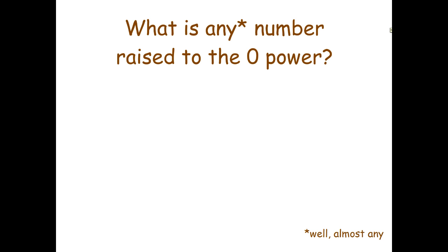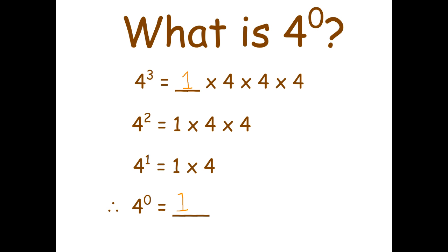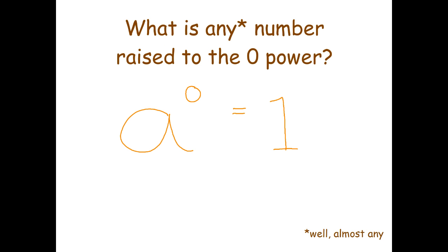So what is any number raised to the zero power? I'll write the letter a to stand for any number — the answer is one. There's nothing special about four; I could have done exactly the same argument with a five and got five to the zero equals one. Any number raised to the zero power is one — it's a nice easy rule because it doesn't matter what the number is, we always get the same answer.